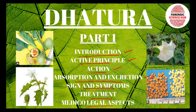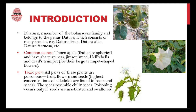Let's get started. Dhatura is a member of the Solanaceae family. It belongs to the plant kingdom and the genus is Datura itself, which consists of many species. There are many species of dhatura — for example, Datura ferox, Datura alba, and Datura fastuosa. These are the various species and the genus remains Datura.